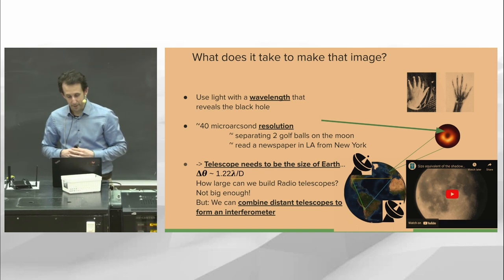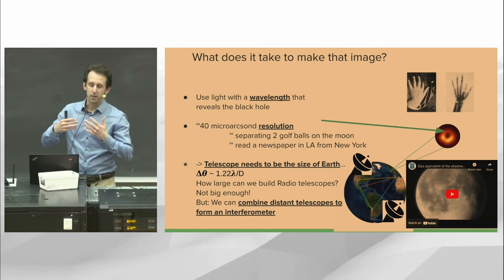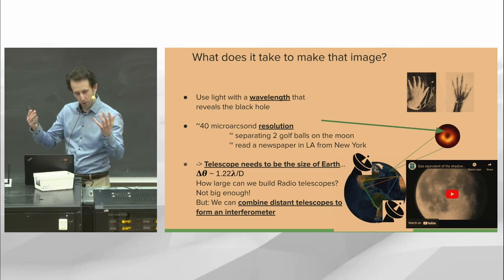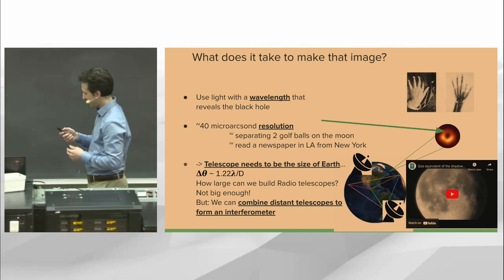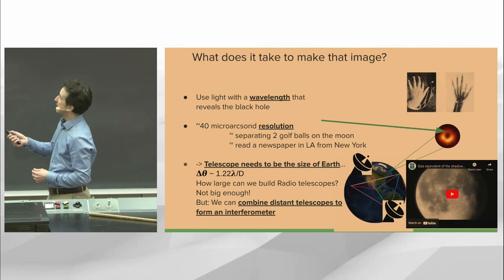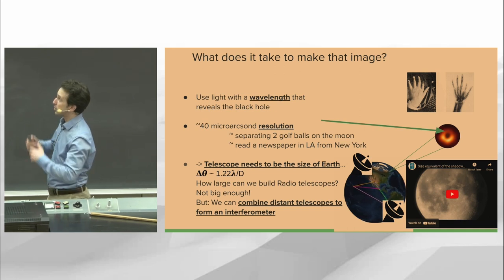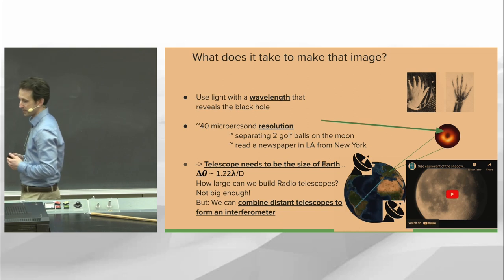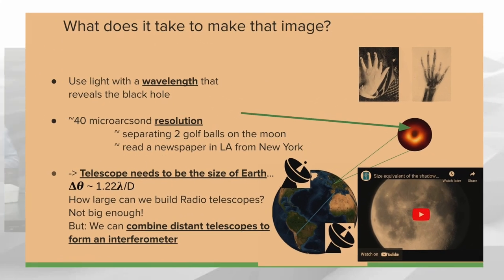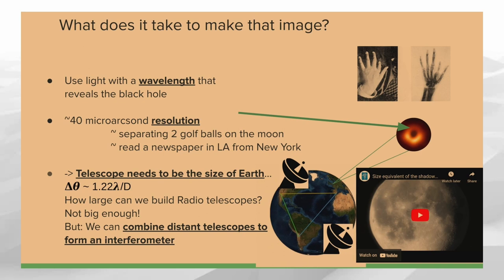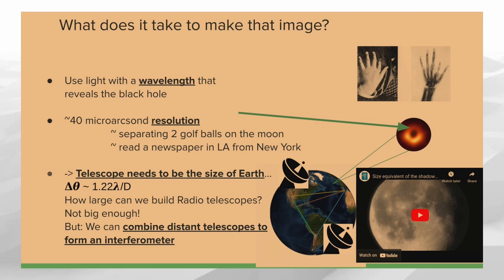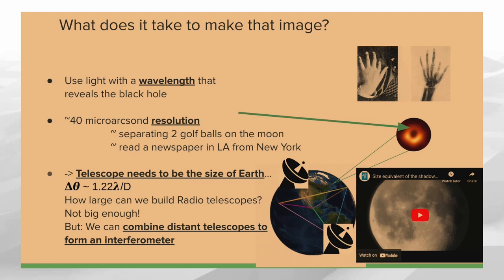If you work out what that means for your telescope — knowing the angular resolution delta-theta — it turns out the diameter of your telescope has to be roughly the size of the planet. Building telescopes bigger and bigger is hard; at some point their own weight causes them to bend and collapse. This is where the idea of interferometry comes in. It turns out you don't actually have to build a telescope the size of Earth.